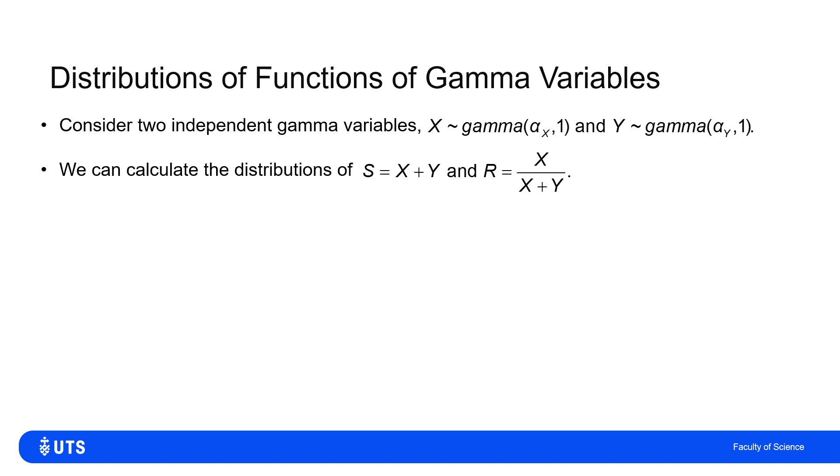So what happens if I sum two gammas that have the same rate parameter? And what happens if I work out of the total of X and Y, how much of that is X? So the ratio of X to X plus Y. Very imaginatively called the sum and this ratio S and R.